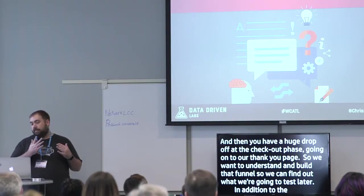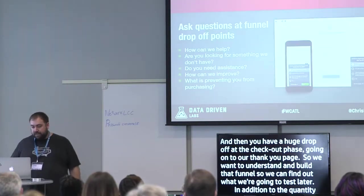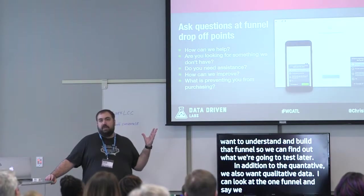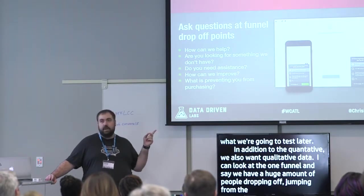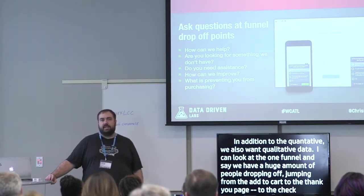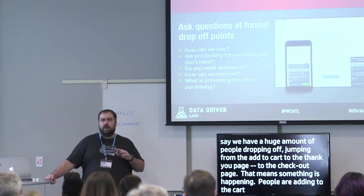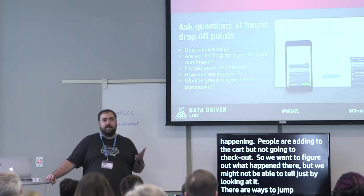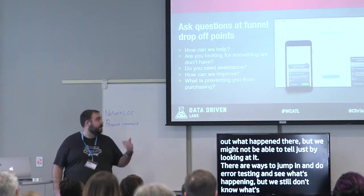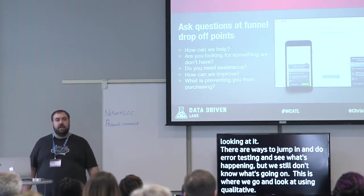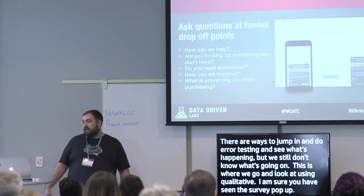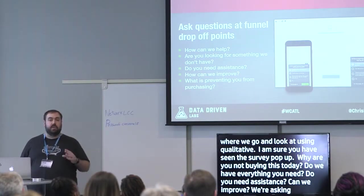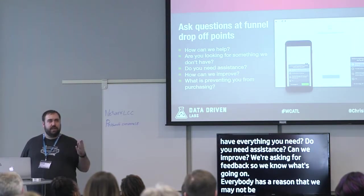In addition to quantitative data, we want to collect qualitative data. Looking at a funnel, I can see a huge drop-off between add-to-cart and checkout — people are adding items but not buying. We might not be able to tell why just by looking at numbers. This is where qualitative comes in: surveys that pop up asking things like, 'Why are you not buying this product today?' or 'Can we improve on anything?' We're asking for feedback because everyone has a reason we may not figure out from graphs alone.